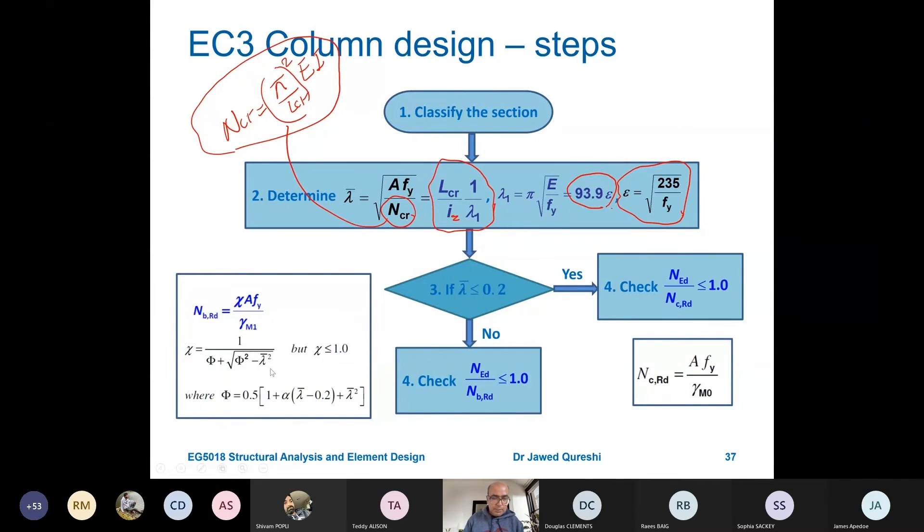How do we work out this reduction factor? There's a quick formula: chi equals 1 over phi plus square root of phi squared minus lambda squared. Phi is 0.5 times bracket 1 plus alpha times (lambda minus 0.2) plus lambda squared. Don't be tormented by this formula. These are given in extracts to Eurocode 3 design aids. If you go there, you'll find all these formulas. But to be honest, this one slide will do the job. It's giving you pretty much everything on how to design a column, and we'll follow this design recipe to solve a problem.